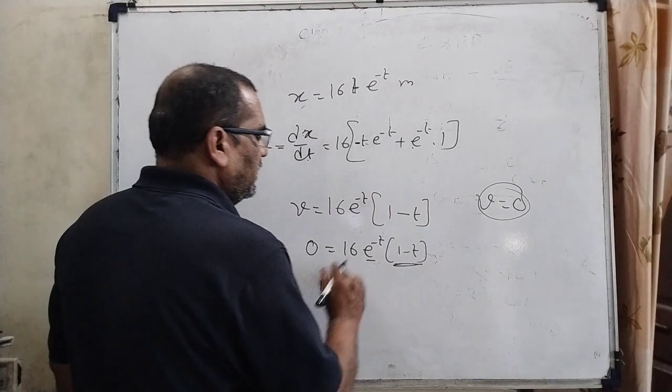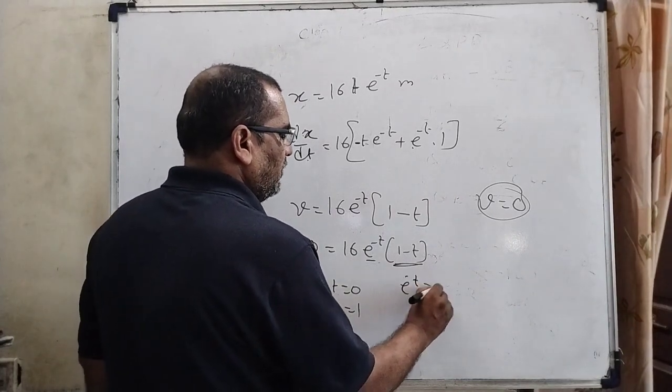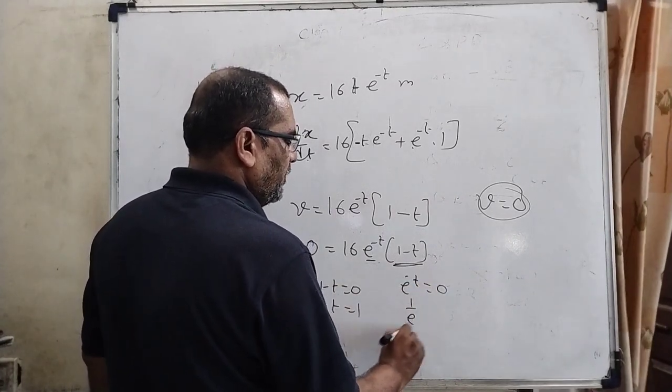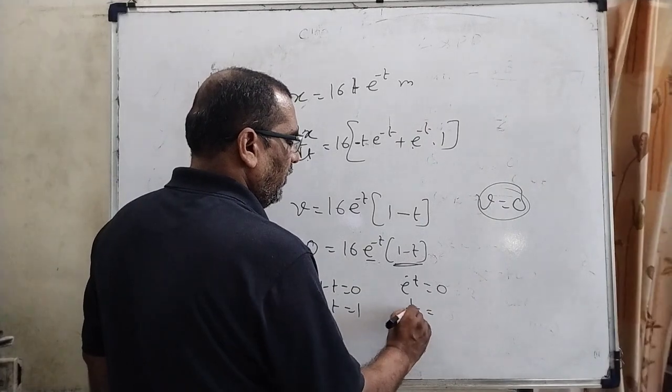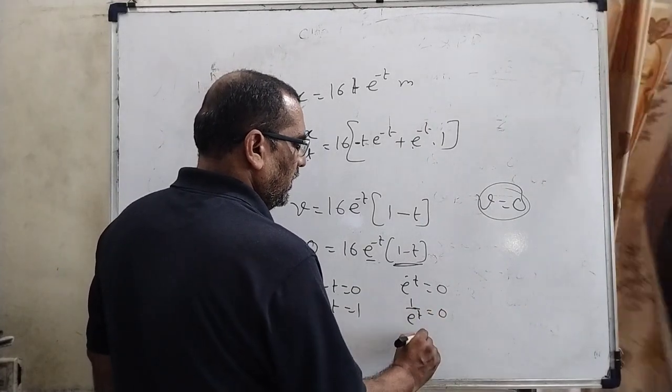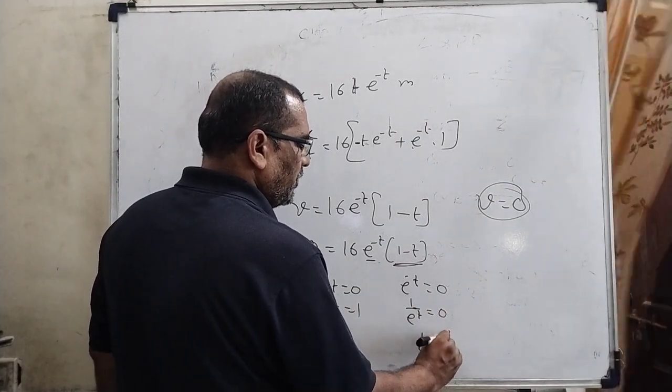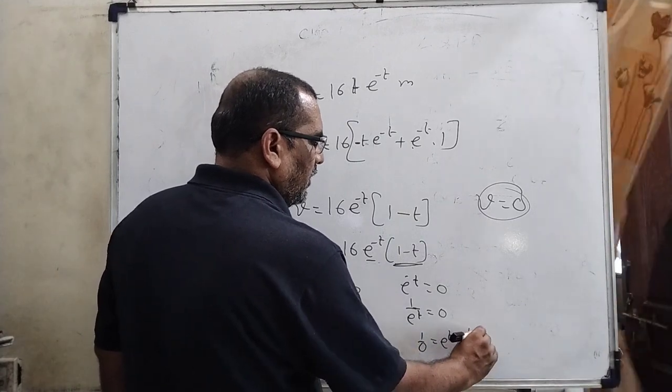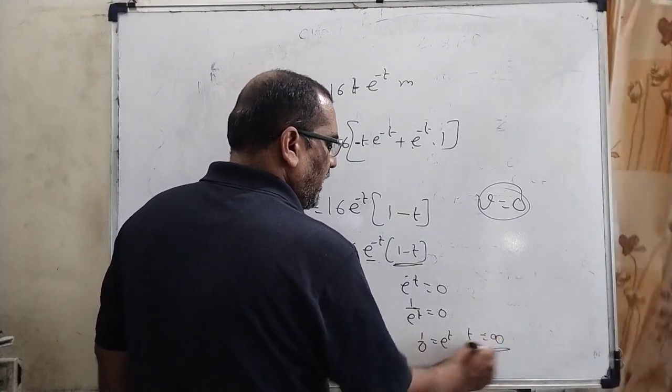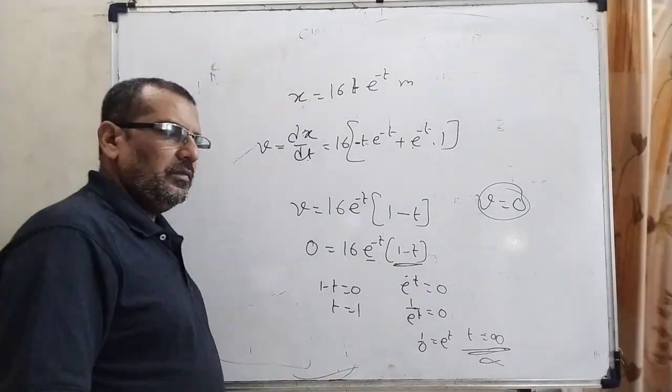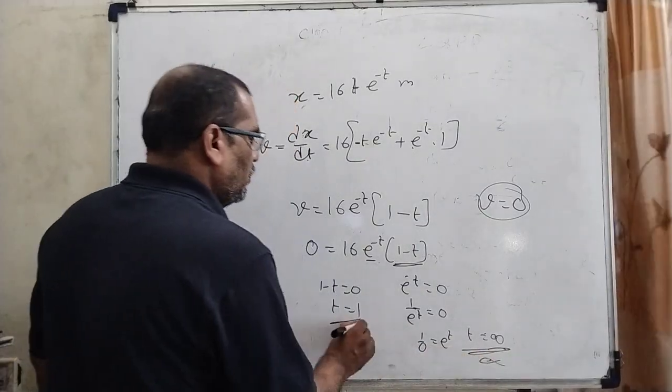Then t = 1. And e^(-t) = 0, then 1/e^t = 0, then 1/0 = e^t means t = infinity. This t = infinity is not possible. So here t = 1.